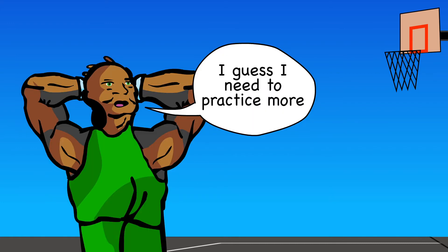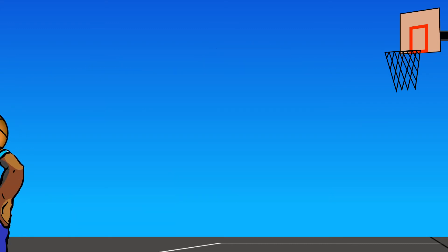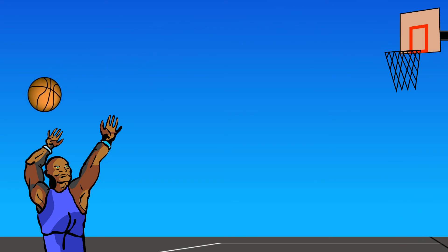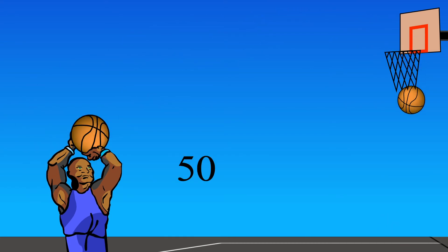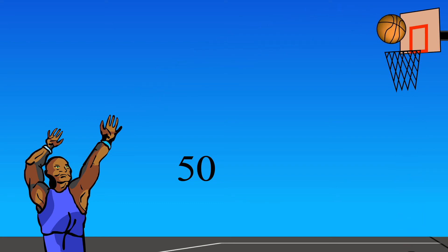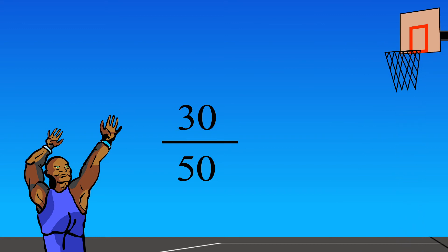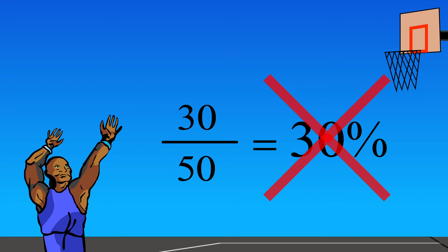Percent means out of 100. But how can we figure out the percent if a player doesn't shoot the ball 100 times? Let's make up an example of a player who only shoots 50 shots at the basket from the free throw line and makes 30 of them. That's 30 out of 50, which is not out of 100, so 30 out of 50 is not 30%.